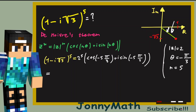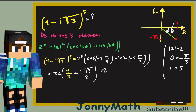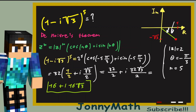This equals 32 times cos(-5π/3), which is 1/2, plus i times sin(-5π/3), which is √3/2. So we get 32·(1/2) + i·32·(√3/2), which equals 16 + 16i√3. And this is our final answer.